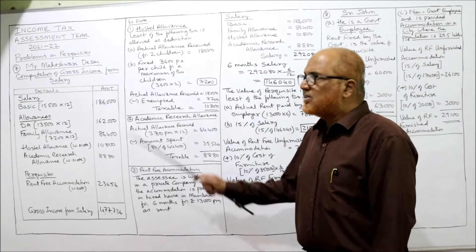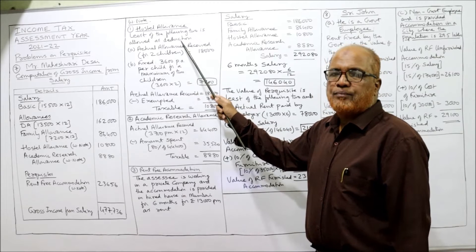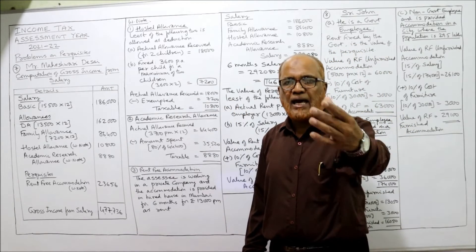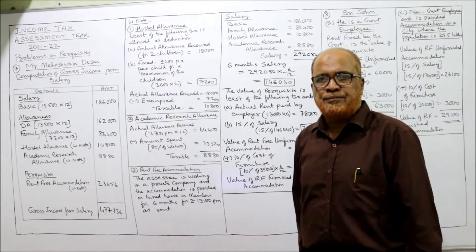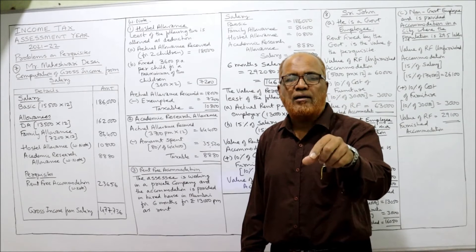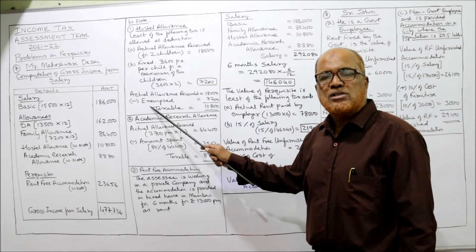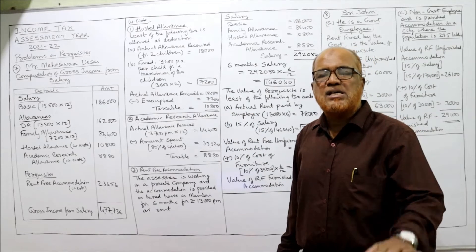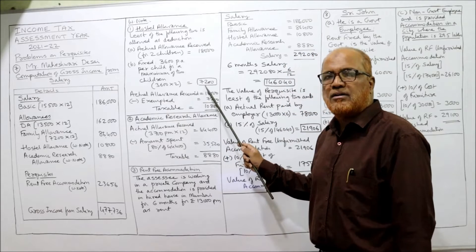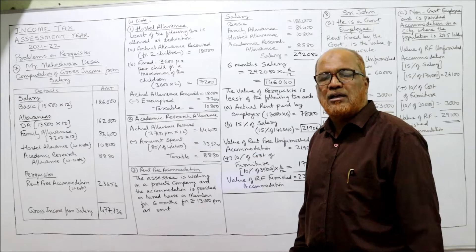Working note for hostel allowance: the least of the following two is exempt. Actual allowance received for two children = 18,000. Income Tax Act fixed amount = 3,600 per annum per child for maximum two children, so 3,600 into 2 = 7,200. The least of 18,000 or 7,200 is 7,200, which is exempted. Taxable hostel allowance = 18,000 minus 7,200 = 10,800.